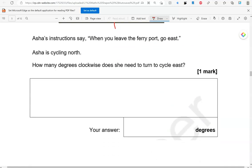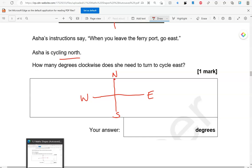Asha's instructions say, When you leave the ferry port, go east. Asha is cycling north. How many degrees clockwise does she need to turn to cycle east? So, we have north, south, west, and east. So, she's cycling north. She's here. And she needs to turn to east. There is east. So, that is 90 degrees.